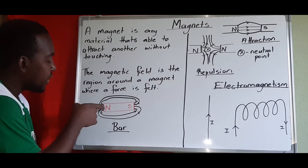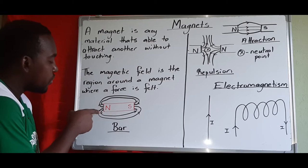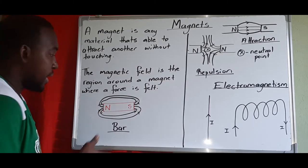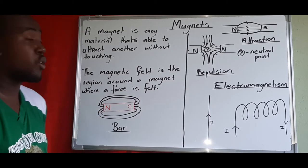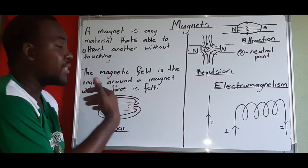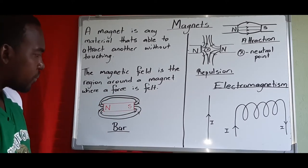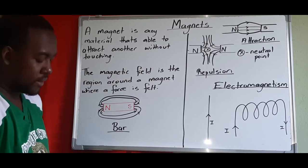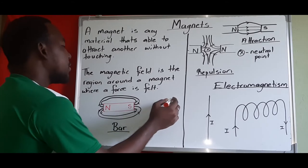Please note the direction of your arrows — they are very important. For the north pole, the field lines are going out, and for the south pole the field lines are going in.